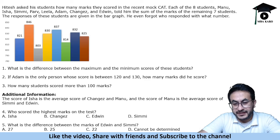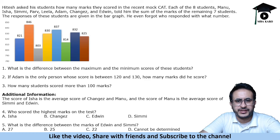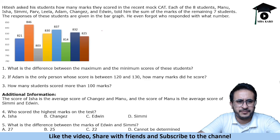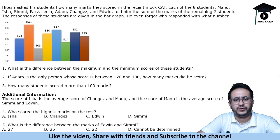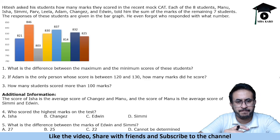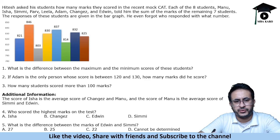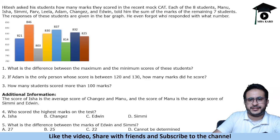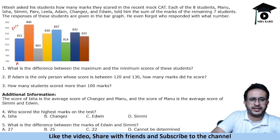Let us look at the next set. It is comparatively easy but requires good thinking. Hitesh asked his students how many marks they scored in the recent MockCat. Each of the 8 students told him the sum of the marks of the remaining 7 students. The responses are given in a bar graph, but we are not told who responded in what manner. So we do not know who these people are whose responses are given to us.